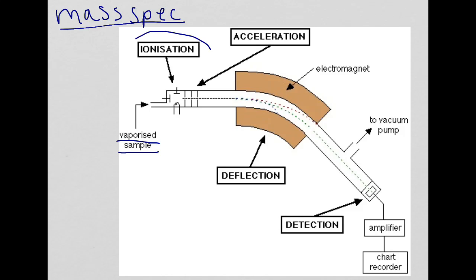The first stage is ionization. What happens at this stage is the vaporized particles are bombarded by high-energy electrons fired by an electron gun, and this knocks electrons off the atom. Therefore it becomes a positively charged ion. A key word to remember there is electron gun.